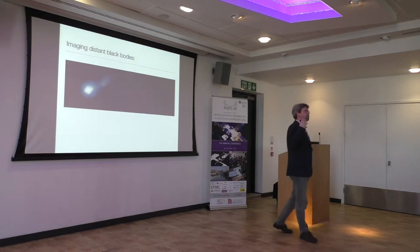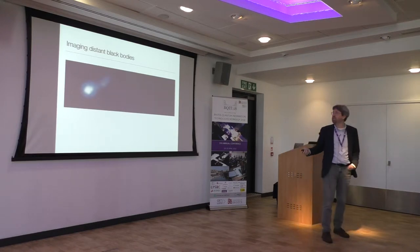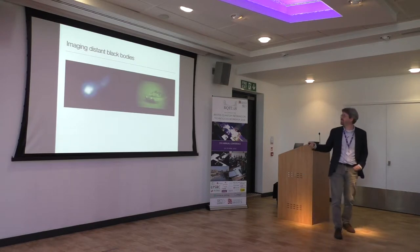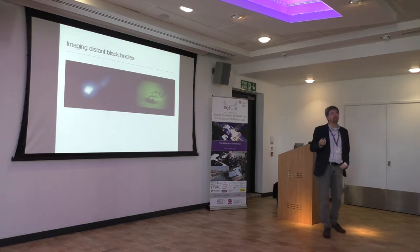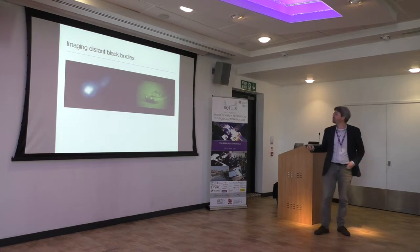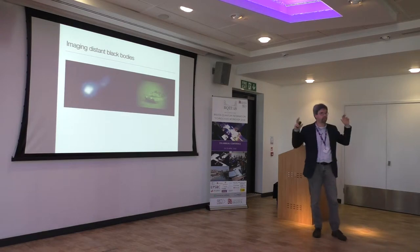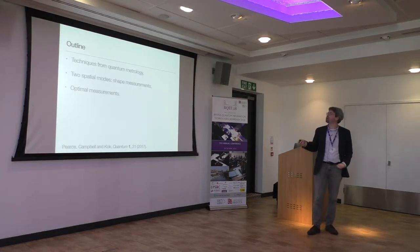The idea is that we want to do telescopy — we want to look at distant objects and see what they look like, for astronomy reasons or other reasons. We want to do that as accurately and precisely as possible. With astronomical objects, you can't really send out quantum light and get some quantum light back. So I'm really talking about receiving thermal light into my detection system, and I want to know what is the best I can do.